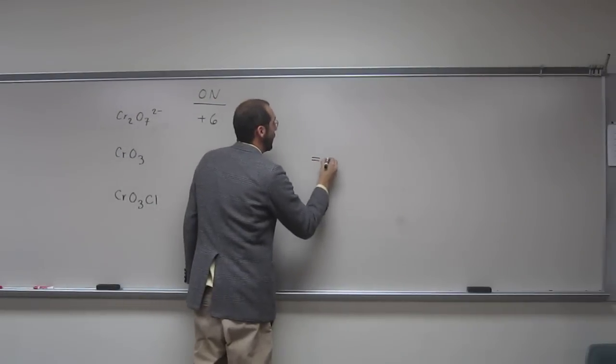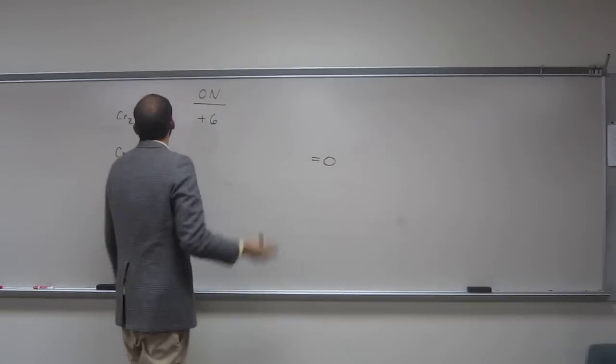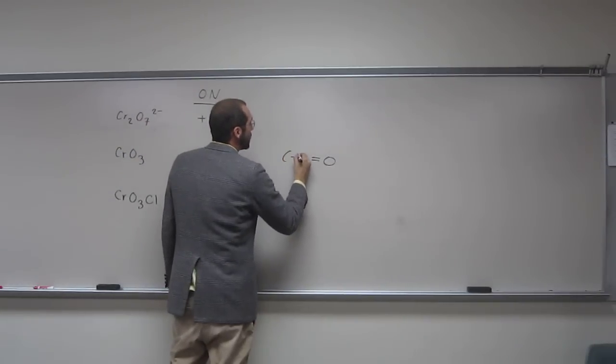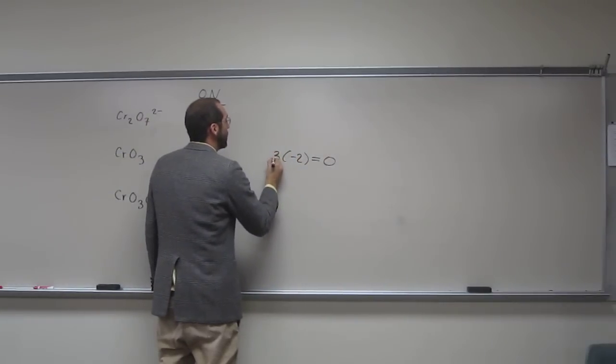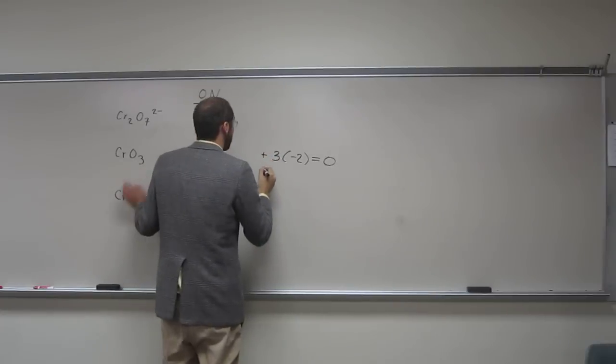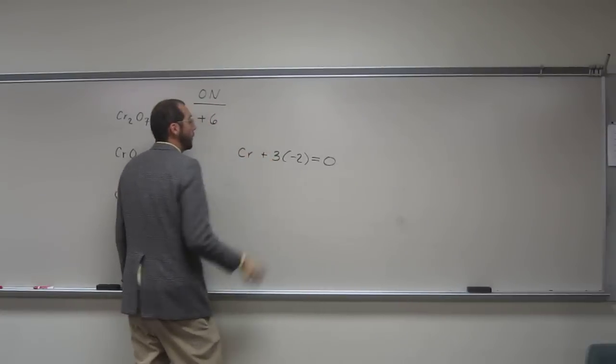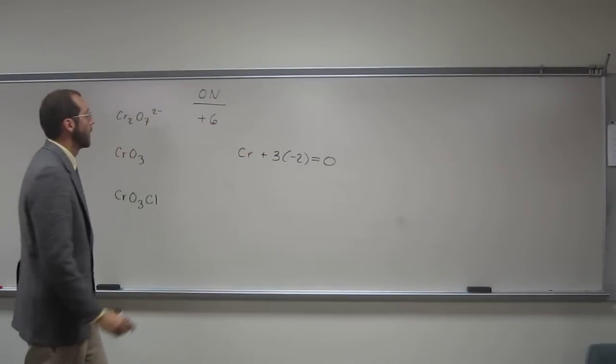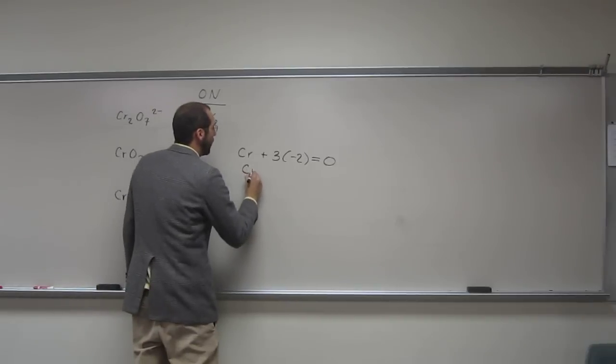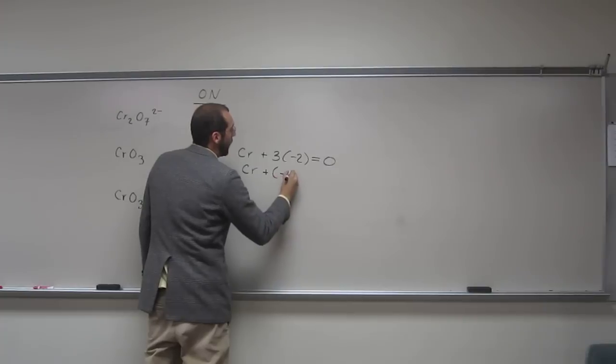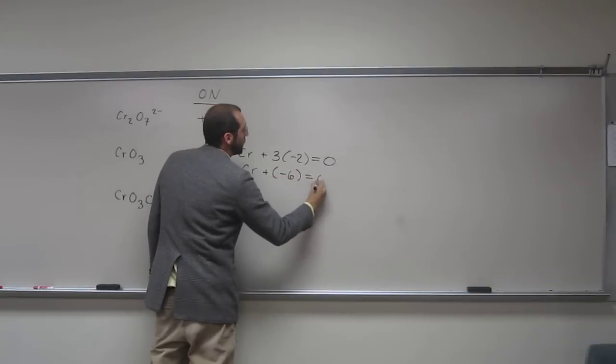So again, I like to do these writing them backwards. So oxygen is minus 2 times 3 of them, and we're looking for chromium. So chromium plus a minus 6 equals 0.